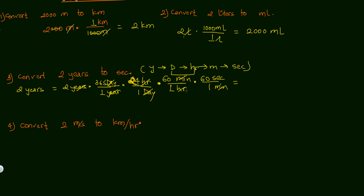Using a calculator, multiplying all the conversion factors gives us 63,720,000 seconds — that is, 2 years equals approximately 6.372 × 10⁷ seconds. You can reverse the process to convert from seconds back to years.